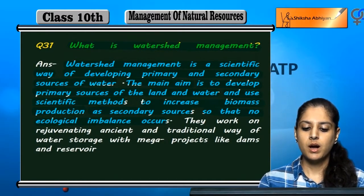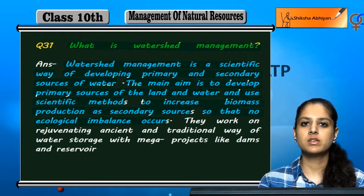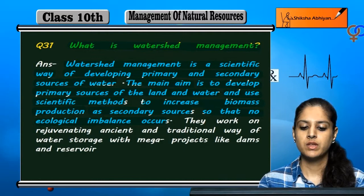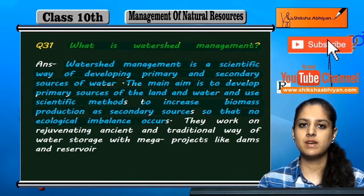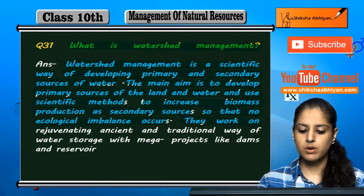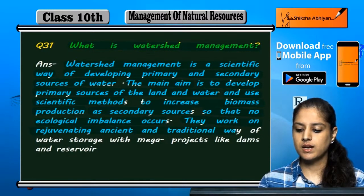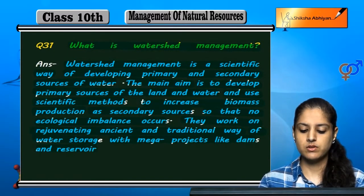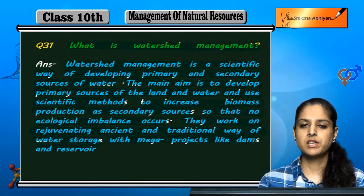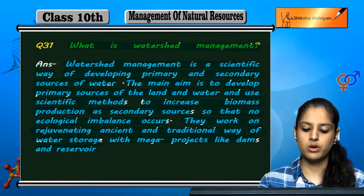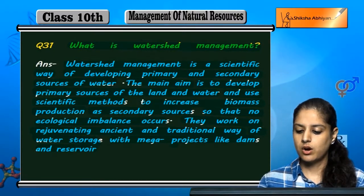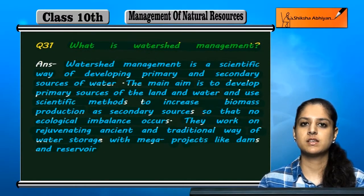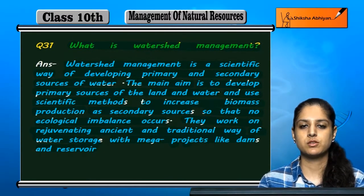Scientific methods ko use karke biomass production hai as secondary sources, so that no ecological imbalance aaye. Hum primary sources — land and water — bhi create karte hain, aur secondary sources bhi jo ki biomass ko use karke hain. They also work on rejuvenating ancient and traditional ways of water storage with mega projects like dams and reservoirs. This is called watershed management.